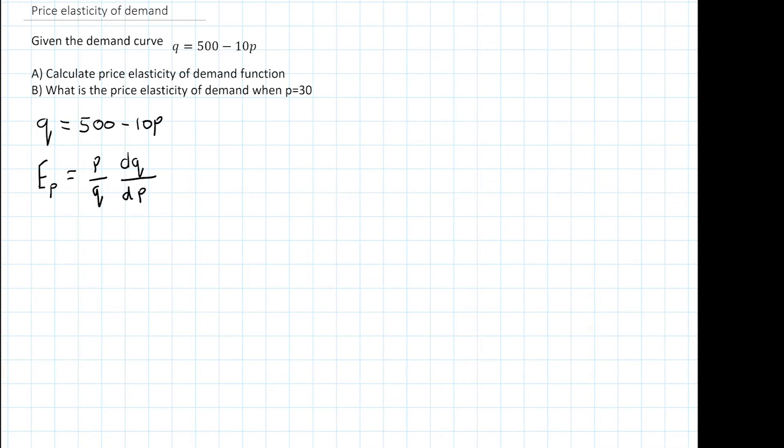So the first thing we want to do is find dq divided by dp, and that's just the derivative of the demand function with respect to p.